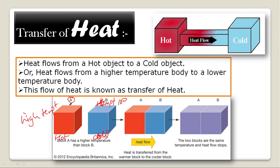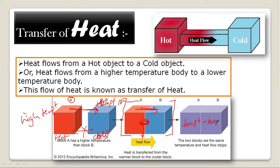Heat flows from the hot body to the cold body and this transfer continues until the temperatures of both bodies become equal. Once the temperature of the hotter body and the colder body are the same, heat transfer stops.